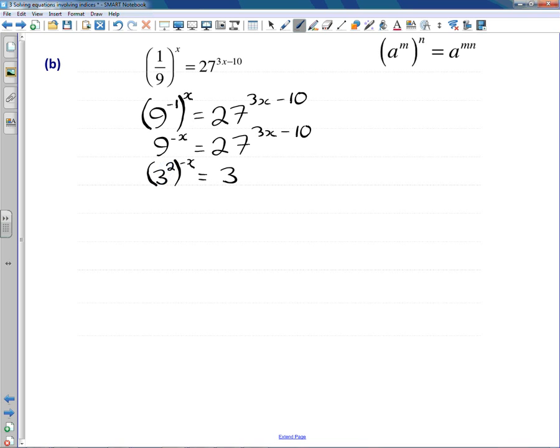And then you've got your 9 there, and we need to raise that to the power of negative x. And then capture 27 a different way—we can write that as 3 cubed. Put that in brackets. There's your 27, and look at the line above—you're required to raise that now to the 3x minus 10. And again, we're going to use this index law to help us tidy this up.